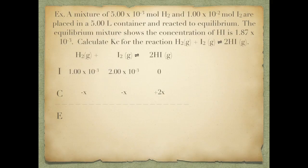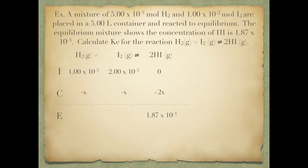Hydroiodic acid is going to gain 2x, because it has a coefficient of 2. Now I can calculate their equilibrium concentrations. I don't know x yet, but this problem actually tells me that my equilibrium concentration of HI is 1.87 times 10 to the negative third. Since 0 plus 2x must equal 1.87 times 10 to the negative third, I can solve for x by dividing by 2, and I get x equals 9.35 times 10 to the negative fourth.